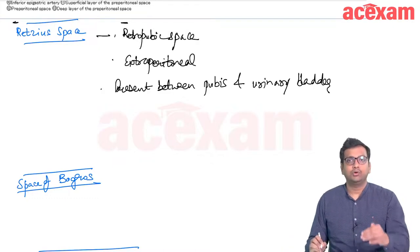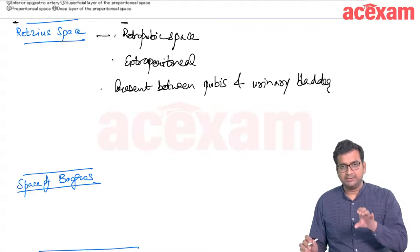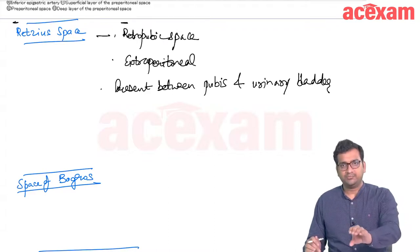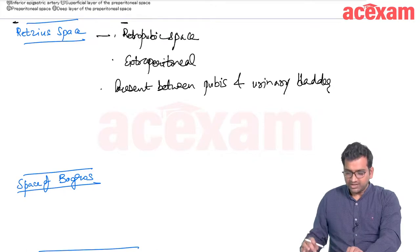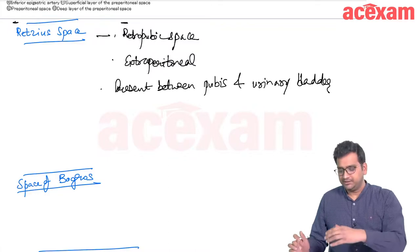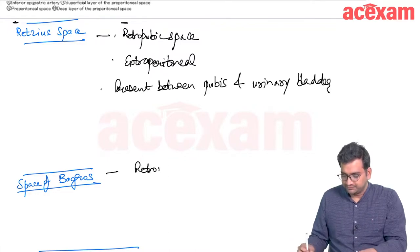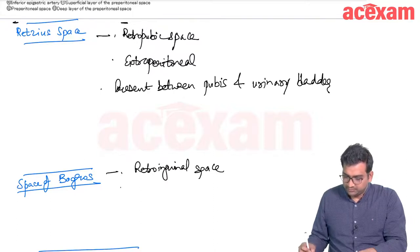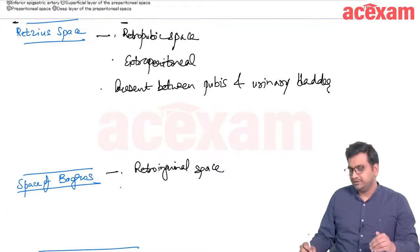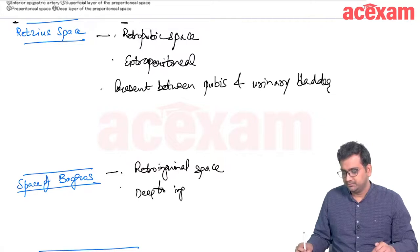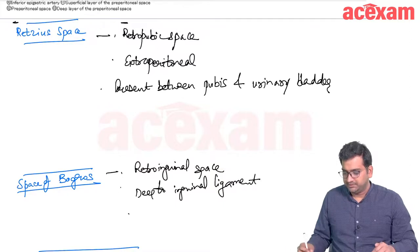The space of Bogros is a retroinguinal space present superior and lateral to the Retzius space; it is located deep to the inguinal ligament and is superior and lateral to the retropubic space.